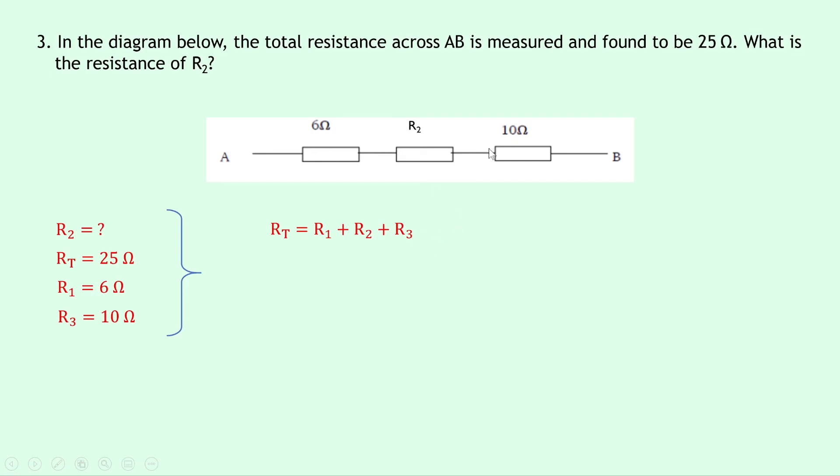Substituting in the numbers now, we have 25 equals 6 plus R2 plus 10. So if we group the 6 and 10 together on this side we get 16, and if we then want R2 on its own we need to subtract 16 from both sides. So we get R2 equals 25 minus 16, and that gives us a final answer of 9 ohms.